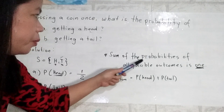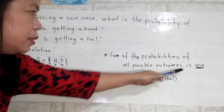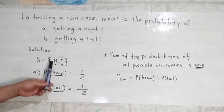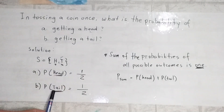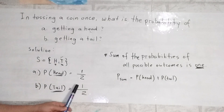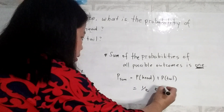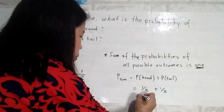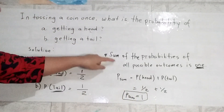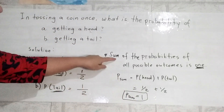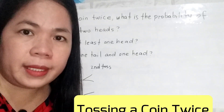Remember one of the properties of probability — the sum of the probabilities of all possible outcomes is 1. The probability of getting a head is 1 half, and the probability of getting a tail is also 1 half. One half plus one half equals 1. This sum is the sum of the probabilities of all possible outcomes.